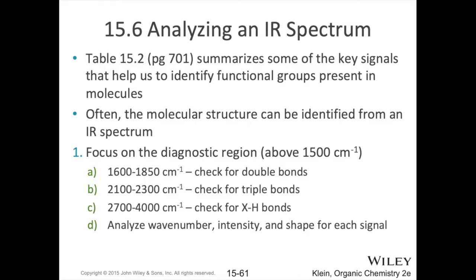For things bonded to hydrogen, those show up above 2700 wave numbers. Once you've looked at wave numbers and figured out which sections they belong to, consider the intensity of the peaks — strong versus weak signals tell you about bond polarity. Then look at the shape — broad or narrow — which tells you about the potential for hydrogen bonding.